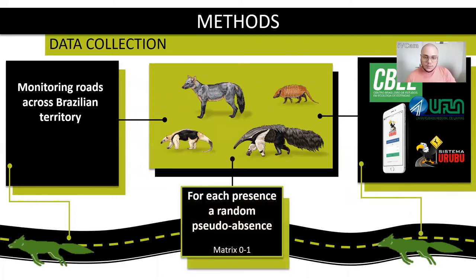For each of the roadkills, we generated a random point representing a pseudo-absence, giving us a matrix of zeros and ones for the statistical analysis.